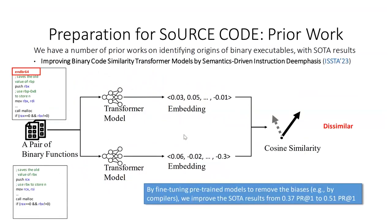We have developed a number of techniques for this program. For example, we have a paper this year at ISSTA which tries to reduce the bias introduced by compilers when training a large language model for binary similarity. We observed that certain instructions introduced by the compiler — like BND-BDR-BR64 — actually caused the model to mispredict, and we have a technique to reduce such bias.